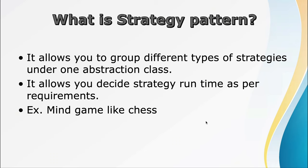Suppose you have implemented one strategy — an easy strategy. When the user selects that they want to play chess against the computer at the easy level, the program automatically chooses the easy strategy and takes steps accordingly. The same way you can have medium, hard, or very hard strategies. If you want to add a new strategy, you just need to add a new class that implements that strategy and let the user choose it.